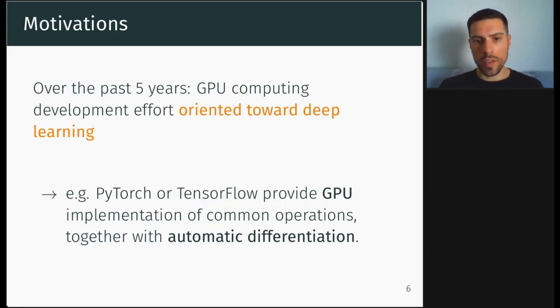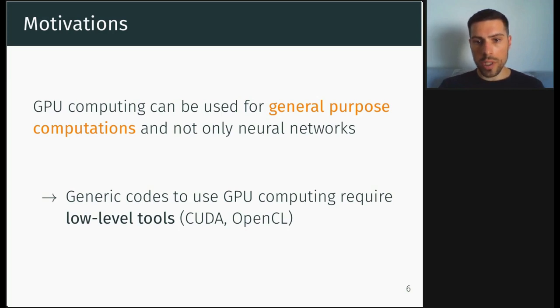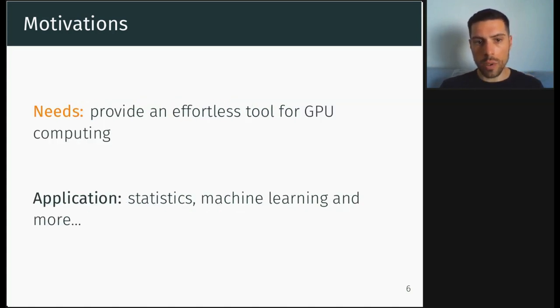Over the past five years, GPU computing development efforts were oriented toward deep learning. For instance, you have libraries like PyTorch or TensorFlow that provide GPU implementation of common operations used to implement neural networks. But GPU computing can be used for general purpose computation and not only neural networks. But to do that, you have to write generic codes using low-level tools like CUDA or OpenCL. So there was a need to provide an effortless tool for GPU computing with a wide range of applications in statistics and machine learning.